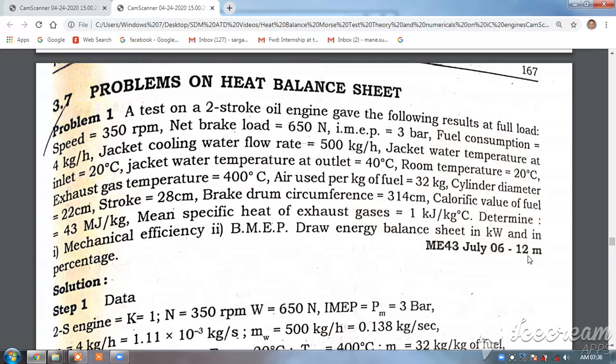Room temperature 20°C, exhaust gas temperature 400°C, air used per kg of fuel 32 kg, cylinder diameter 22 cm, stroke 28 cm, brake drum circumference 314 cm, calorific value of fuel 43 MJ/kg, mean specific heat of exhaust gases 1 kJ/kg°C.